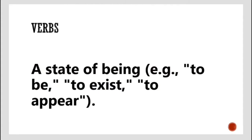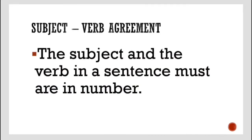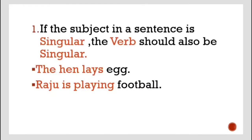Now we will move on to subject-verb agreement. The subject and the verb in a sentence must agree in number. If the subject in a sentence is singular, the verb should also be singular. For example: I have one pen — I am having one pen, so it is singular. The hen lays an egg — egg means one, and eggs means many, so here only one egg.